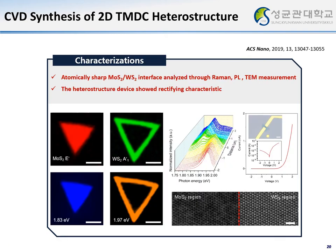We characterized the one-step synthesized 2D heterostructures using Raman, PL, and TEM measurements. From the mapping image and TEM image, the MoS2 core and WS2 shell layer are clearly distinguished. We also made a device using these heterostructure crystals, and the device shows rectifying behavior which agrees with the formation of the p-n junction.